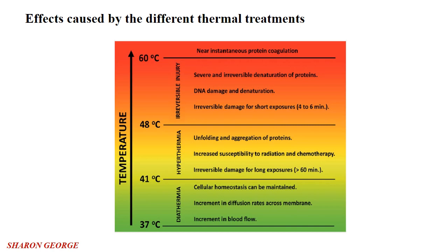The temperature range from 37 to 41 degrees Celsius is considered the diathermia range. In that region, such temperatures do not induce relevant modification at the cellular level. However, moderate heating temperature has beneficial health effects associated with different processes, such as improvement in blood flow and diffusion rate across the cellular membrane. Normally, tissues like tendons can be stretched more easily when subjected to moderate heating, favoring muscle relaxation and pain relief. For that purpose, this diathermia treatment is used.